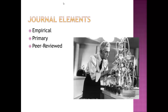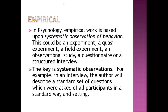The journal elements we'll cover are empirical, primary, and peer-reviewed. Empirical work, for example in psychology, is based on the systematic observation of behavior. This could be an experiment, quasi-experiment, field study, observational study, questionnaire, or structured interview. The key is that they are making systematic observations. In a structured interview, the author will describe a standard set of questions asked of all participants in a standard way and setting, making it a systematic observation of verbal behavior.